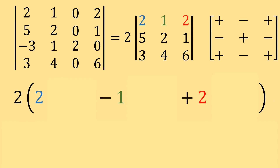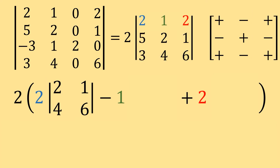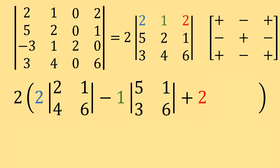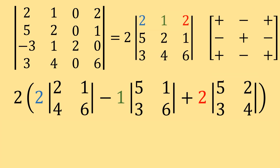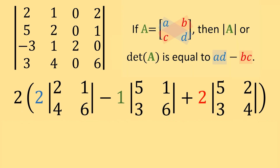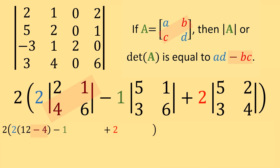Then we multiply each one by their minors. We cross out row 1, column 1 for the first 2 and are left with that determinant. For the 1, we cross out row 1, column 2 and are left with that determinant. And for the final 2, we cross out row 1, column 3 and are left with that determinant. For these 2x2 determinants, we do the diagonal multiplication and subtraction process. So: 2 times 6 minus 4 times 1 gives 12 minus 4. 5 times 6 minus 1 times 3 gives 30 minus 3. And 5 times 4 minus 2 times 3 gives 20 minus 6.